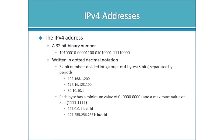An IPv4 address is a 32-bit number divided into four groups of eight bits, or bytes, separated by periods. We get numbers like 192.168.1.200 or 172.16.123.100. Each digit separated by the periods represents a byte — eight binary bits. This is important because a byte only has certain possible values: the minimum is all zeros, equating to decimal zero, and the maximum is all ones, equating to decimal 255.